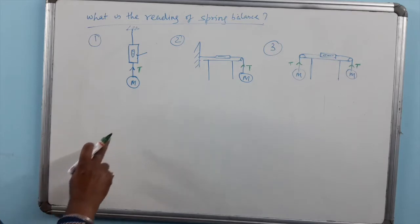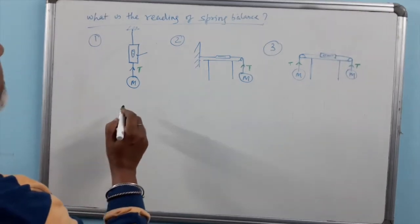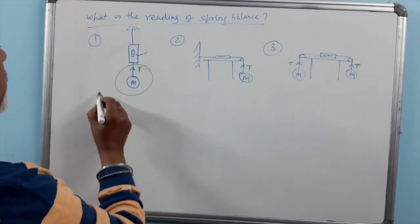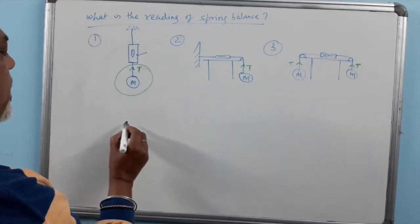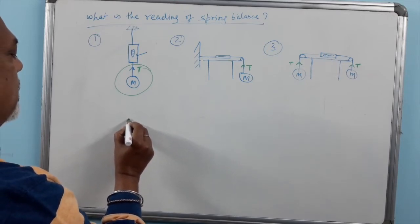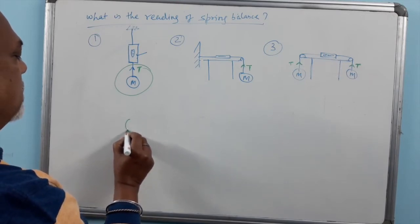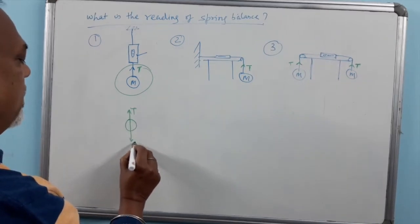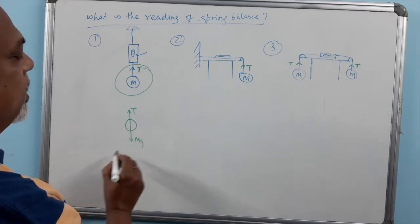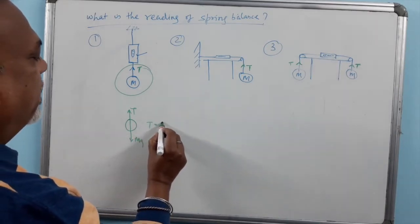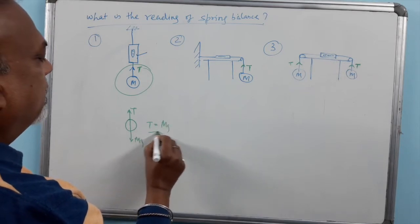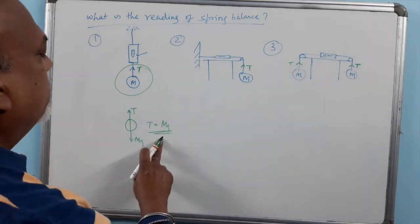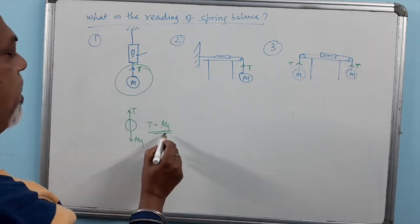In the first situation, if we draw the free body diagram of this mass, T will be acting upward and mg will be acting downward. So what will be T? T will be nothing but mg. So the reading will be mg.